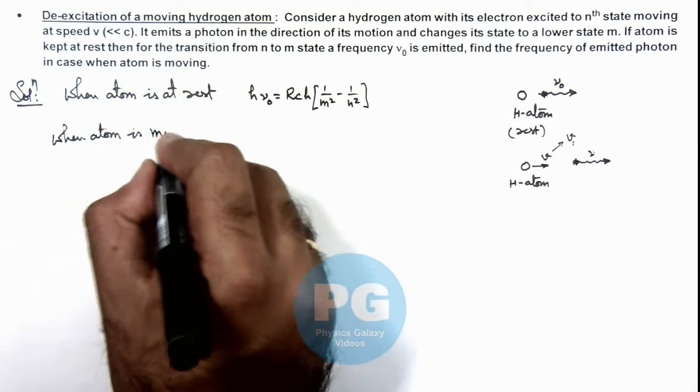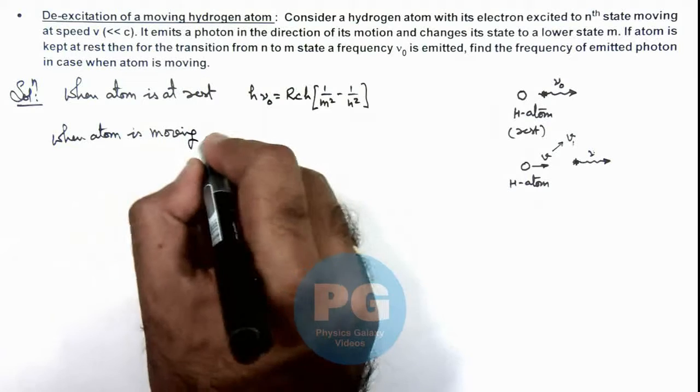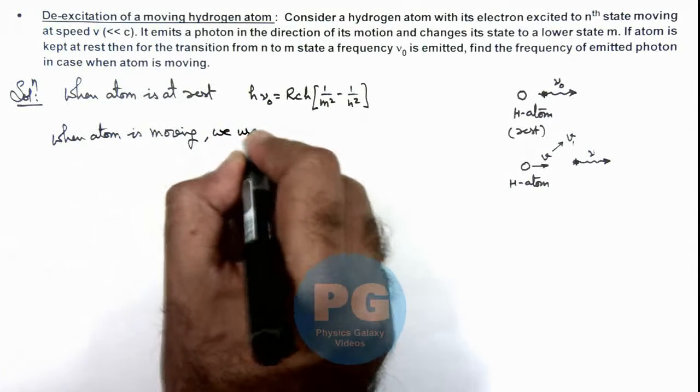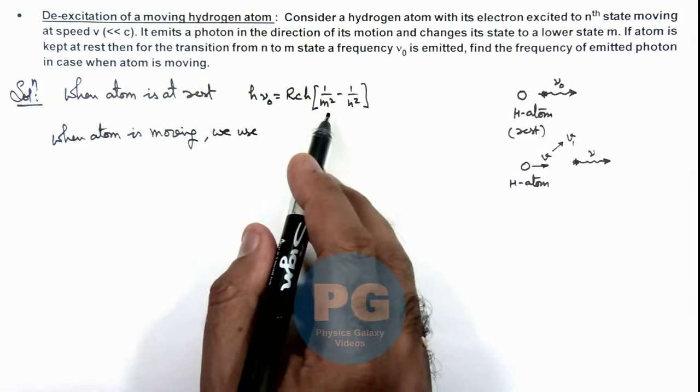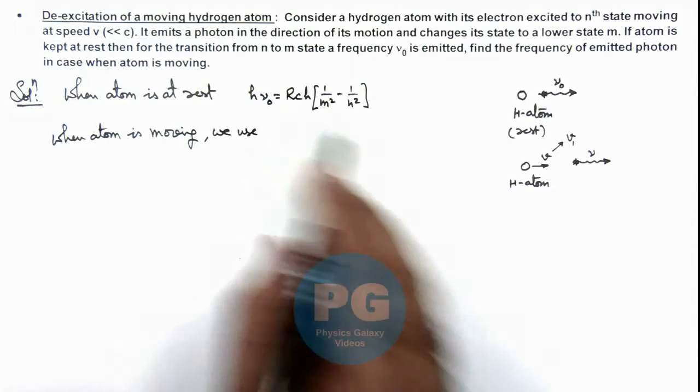Here, we use this is the amount of energy which is overall released in de-excitation. So we can write initial energy of atom was (1/2)mv^2